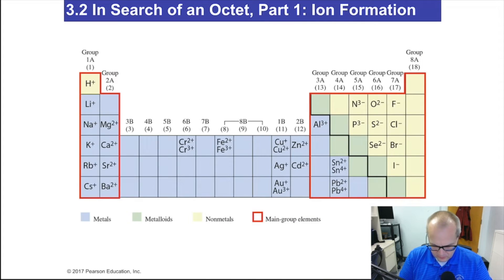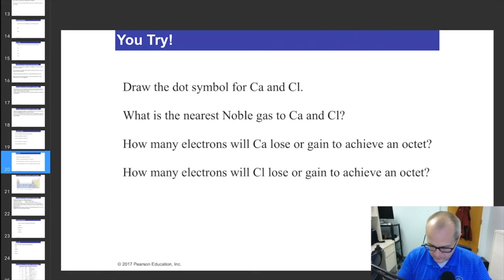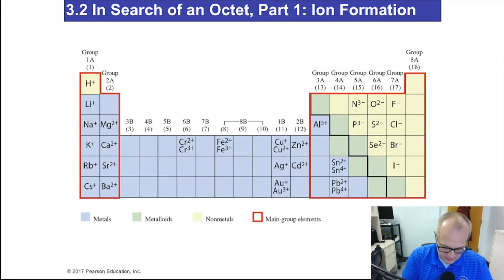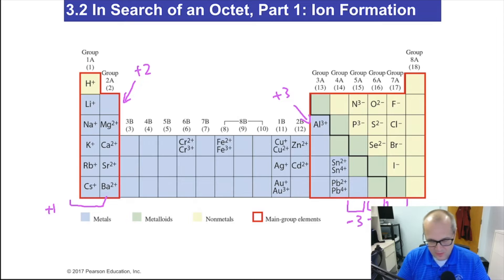If you look at this table, you can see the relative charges of all the common atoms or ions. Everything in group 1 has a +1 charge, everybody in group 2 has a +2 charge, and aluminum is +3. Everybody in group 17 is negative 1. Groups 16 and 15 are negative 2 and negative 3 respectively. I should say nonmetals — nonmetals in group 17 are negative 1, group 16 are negative 2, and group 15 are negative 3.